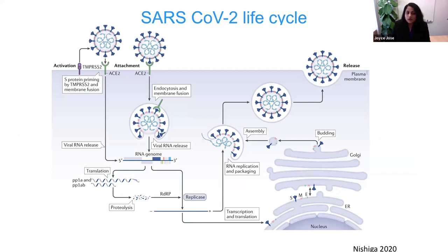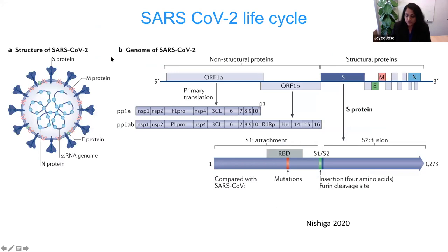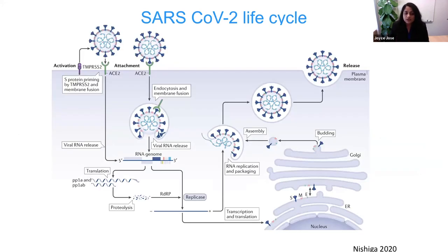I want to briefly go through the life cycle of this virus to highlight the area of interest for my research. SARS coronavirus binds the receptor ACE2, angiotensin convertase enzyme, present on the cell surface. The spike protein can bind to the ACE2 receptor, and then the virus enters the cell. Since it's an enveloped virus, the goal is to release the viral genome into the cell. There are two pathways: fusion at the plasma membrane, or receptor-mediated endocytosis.